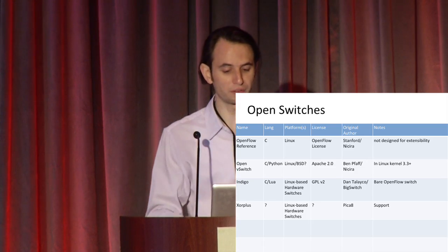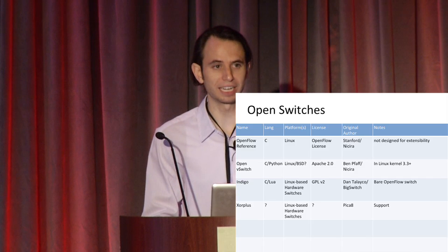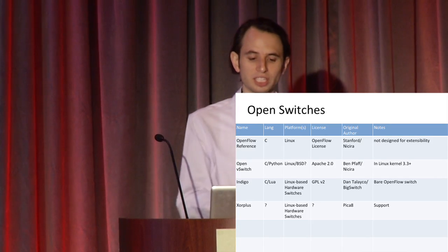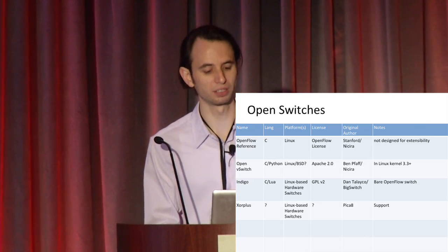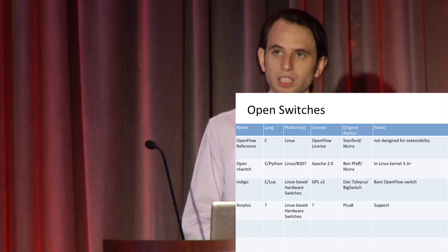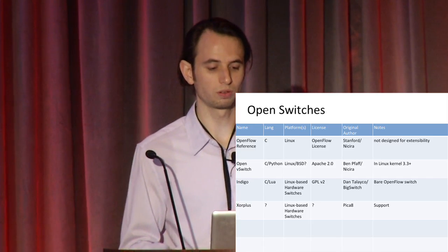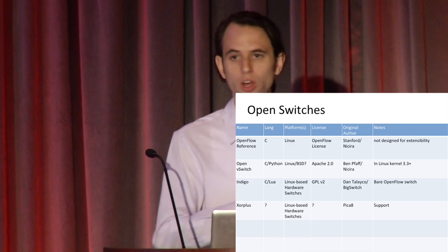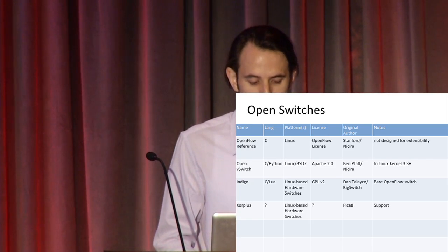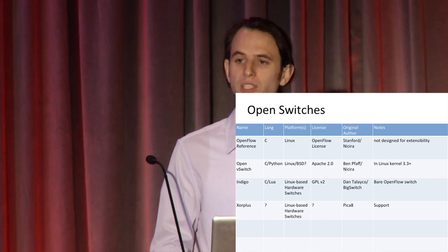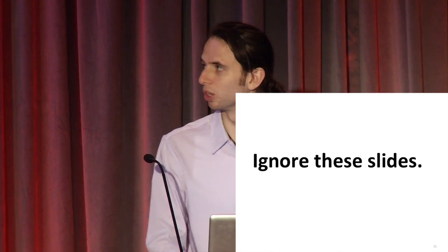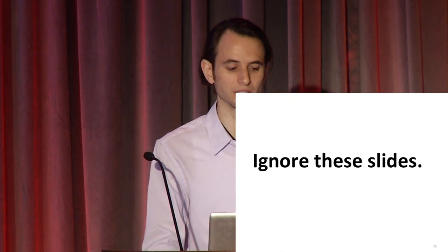There are all kinds of open switches - ones you can modify. The OpenFlow reference is effectively dead at this point; that was the original. NACIRA now maintains OpenVSwitch at openvswitch.org, which is faster than the Stanford reference. Indigo is an example of an open switch - it's C code plus Lua bindings that let you run a pure OpenFlow switch on top of Broadcom hardware sold by multiple vendors. XOR Plus, which Pika 8 does on top of Pronto boxes, is not quite as open - you have to email them for the source code. Just ask your vendor for the latest information, because as soon as it's printed, it's out of date.